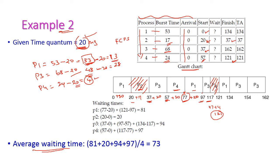After P4, P1 starts its remaining execution with a balance of 13ms. So 121 plus 13 equals 134; the finish time of P1 is 134. After that, P3 resumes with 28ms remaining: it executes 20ms and then the remaining 8ms. So P3 finishes at 162. Since the arrival time is 0, the turnaround time equals the finish time for all processes.